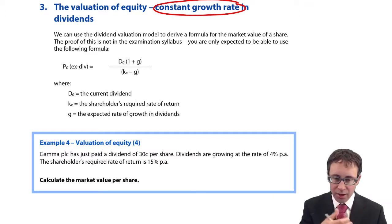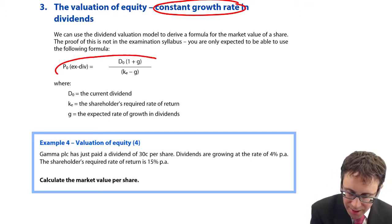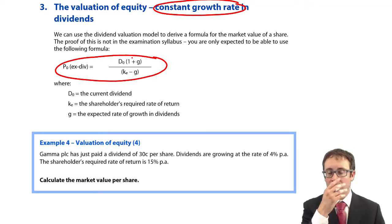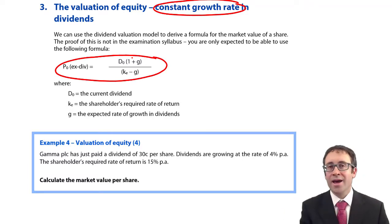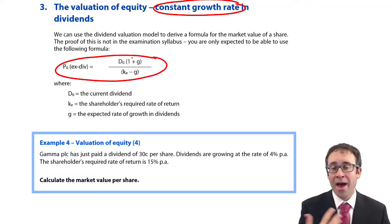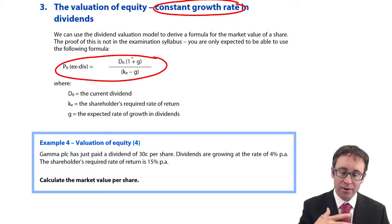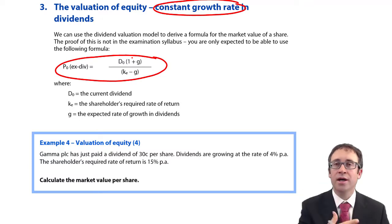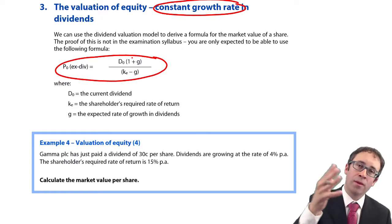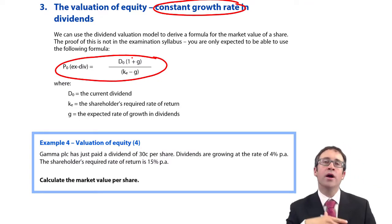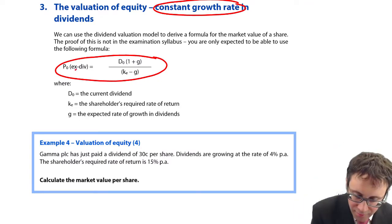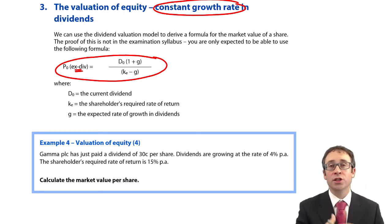You've got the formula to work out the price ex-div. In the last video, I told you the cum-div, and again, it's everything that you've seen from F1. However, when you worked in F1, you tried to work out the cost of equity and not the price. Here, we are working out the price. So the ex-div market value is D0(1+g) divided by ke minus g.